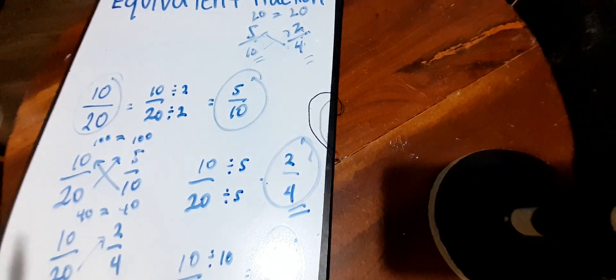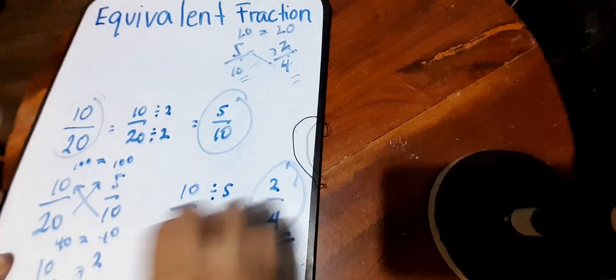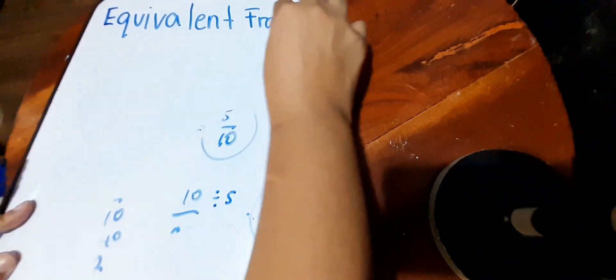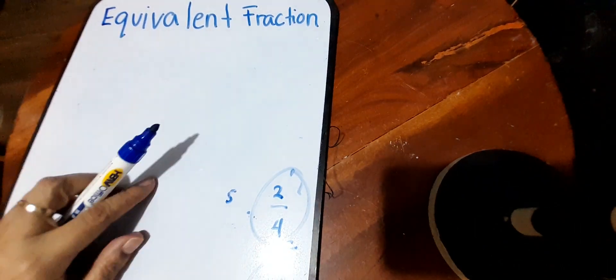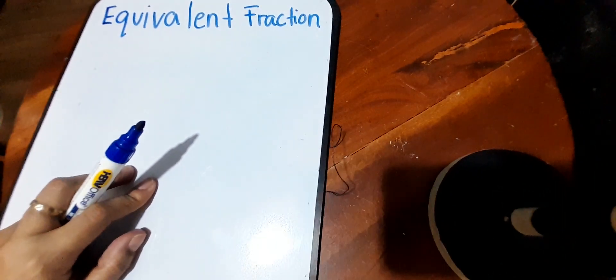That's how we get equivalent fractions — we can get equivalent fractions by multiplying, or by dividing the same number to both numerator and denominator. It can't be to the numerator only.